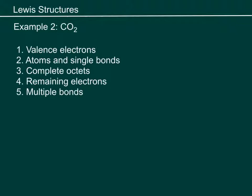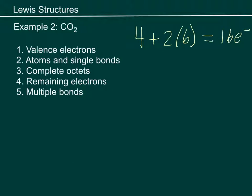In this one we're going to look at CO₂. We're going to follow the same steps. Valence electrons: four from carbon, and two times six for each oxygen. That gives me 12 and 4 is 16 electrons total — that's what we're looking for. Next, I'm going to arrange them with single bonds: C–O–O. Carbon is listed first, so it's probably my central atom. Complete the octet around the oxygens, the non-central atoms. Do a quick count to see where we are.